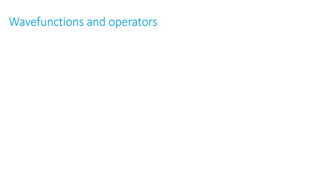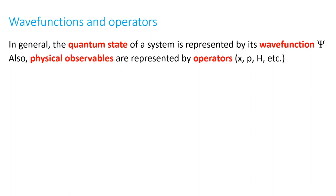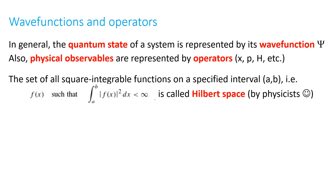Let's think about wave functions and operators. We've already considered this in several cases: the infinite square well, the harmonic oscillator, and the free particle potential. In general, the quantum state of a system is represented by its wave function psi - like the sine functions of the infinite square well as we go up. Physical observables are represented by operators, for example x the position, p the momentum, H the total energy, and you've calculated expectation values using wave functions and physical observables. Now we'll cast this in a more general mathematical format.